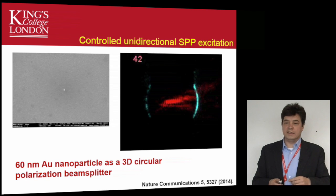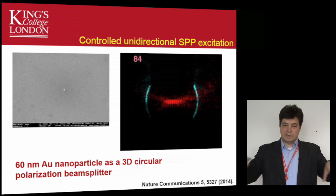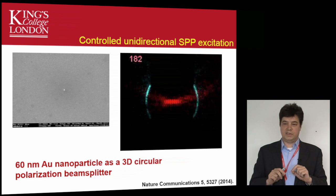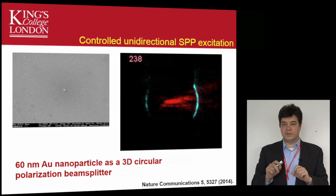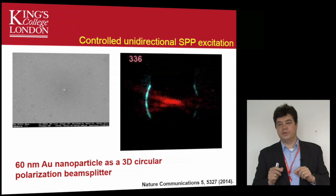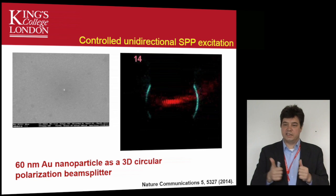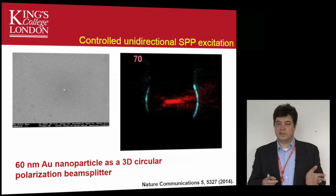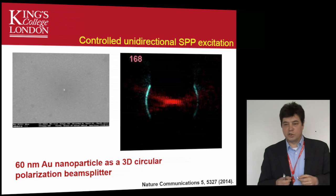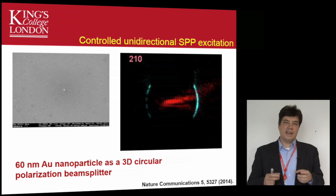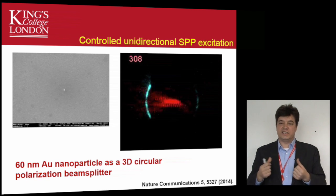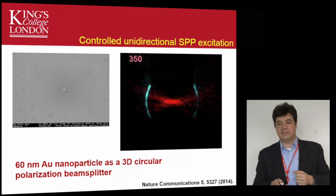Then we move to a three-dimensional situation, where we have a gold film supporting surface plasmon polaritons and a single 60 nanometer gold nanoparticle sitting on top of the surface. In a movie showing how surface plasmon polaritons propagate from the particle as we change the polarization of excitation light: with linear polarization, surface polaritons are excited in both directions; with left circular polarization, in one direction; and with right circular polarization, in the opposite direction. By controlling only the polarization of the illuminating light, we can control the directionality of surface plasmon polariton excitation - achieving polarization splitting with a single 60 nanometer particle.